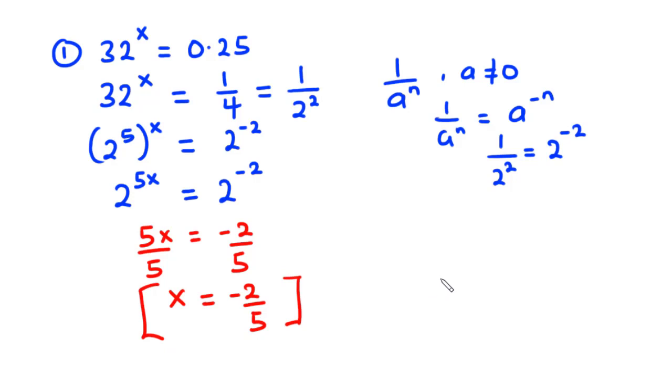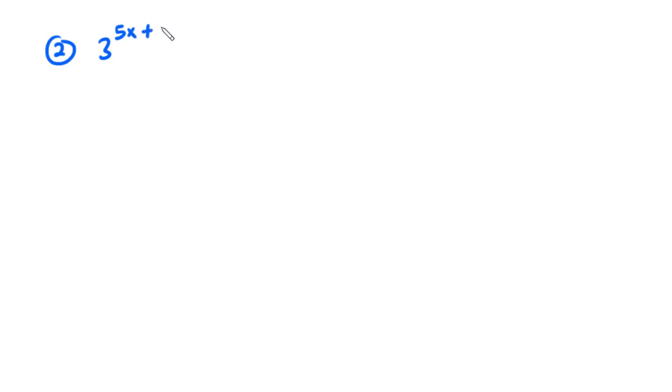Now let's solve the second example. For the second example, we have 3 exponent 5x plus 3 equals 81 exponent x plus 3.